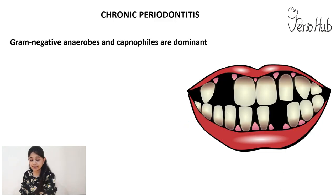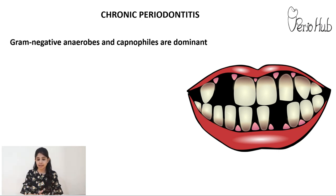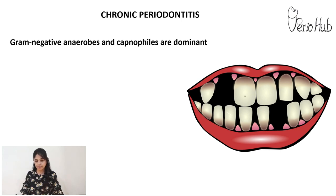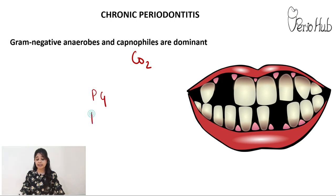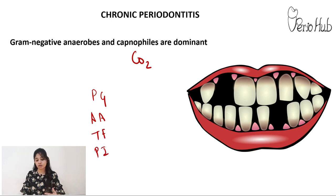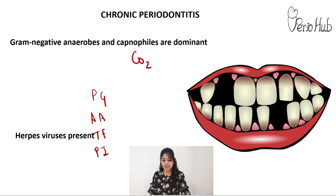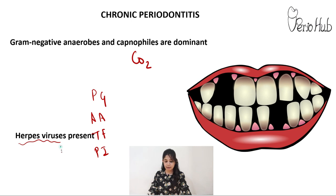In chronic periodontitis, the organisms seen are mostly gram-negative anaerobic capnophiles — organisms which thrive in the presence of carbon dioxide. We predominantly see the orange and red complex bacteria: Porphyromonas gingivalis, Aggregatibacter actinomycetemcomitans, Tannerella forsythia, Prevotella intermedia, and certain spirochetes. Experimental studies have also identified certain viruses such as the Epstein-Barr virus and human cytomegalovirus.